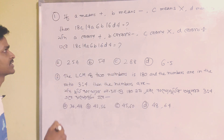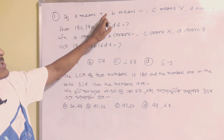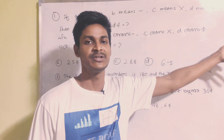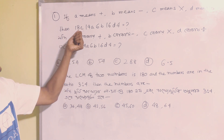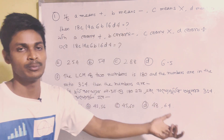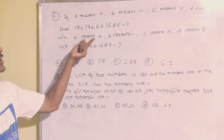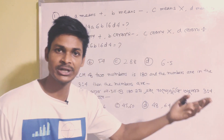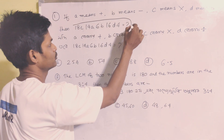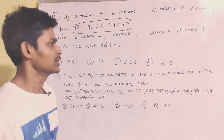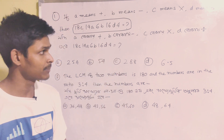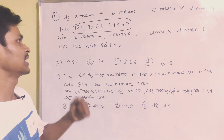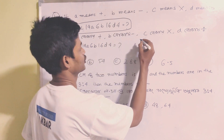First MCQ: If A means plus, B means minus, C means multiplication, D means division, then find the value of 18C14A6B16D4. We substitute: A is plus, B is minus, C is multiply, D is divide.